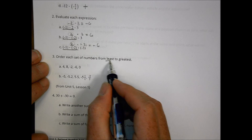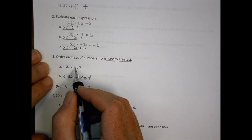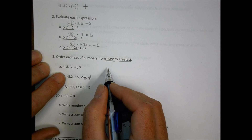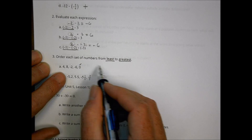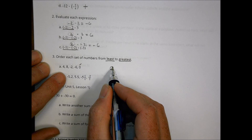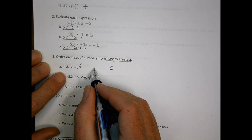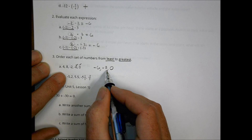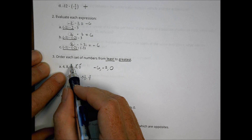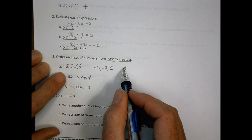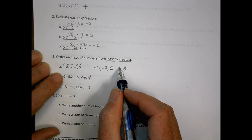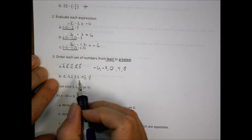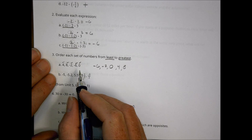Number three: order each set of numbers from least to greatest. Over here I have a series of positive and negative numbers. Zero is in the middle. I have negative 6, which is less than zero. Negative 2, which is between zero and negative 6. I have 8, which would be above zero on the positive side. And I have 4, which is between zero and 8. That was not too bad.